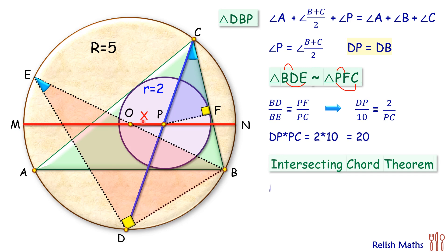Now here MP is nothing but MO plus x, or 5 plus x. And same way, PN will be 5 minus x. And DP times PC, this we have calculated earlier, that's 20.